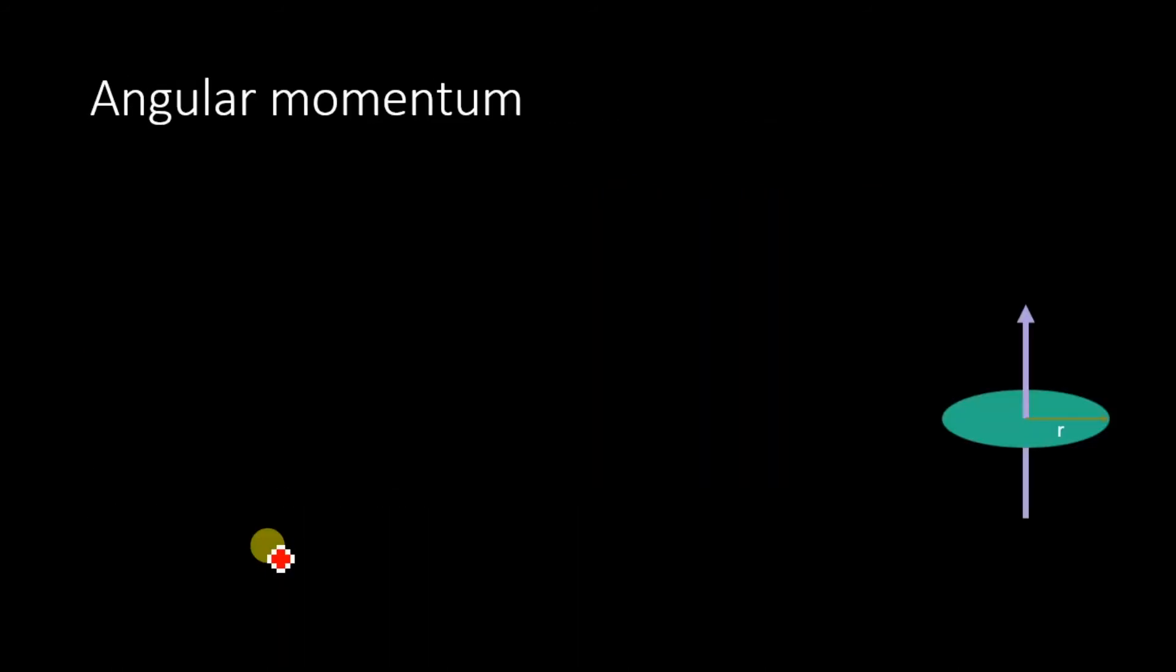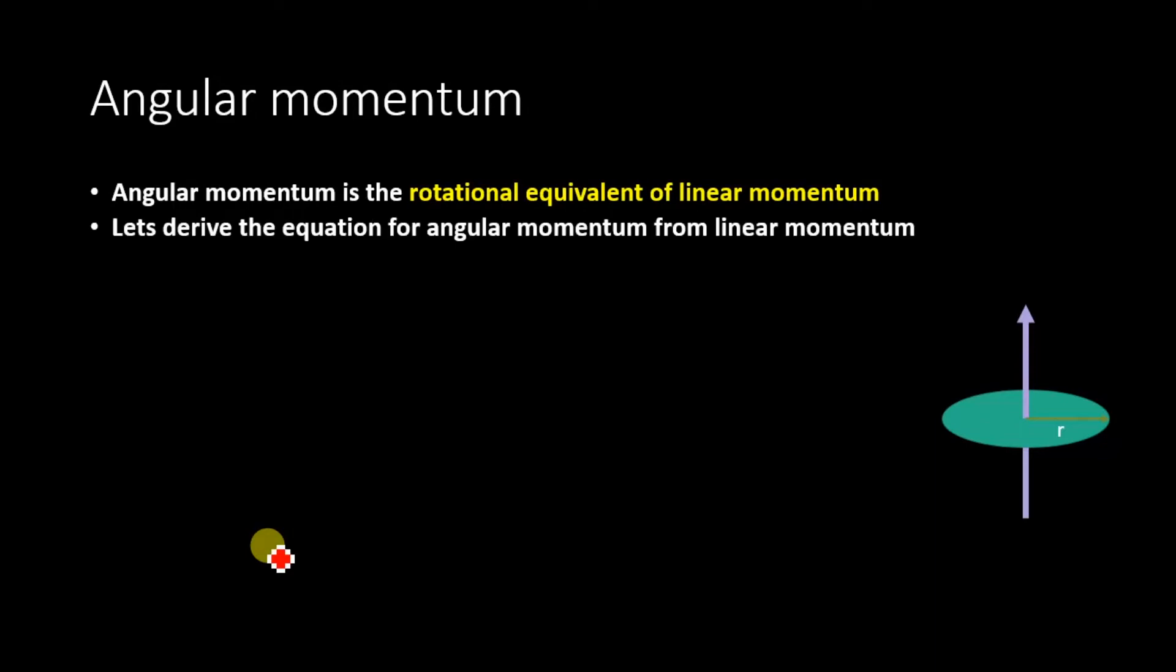Now what is angular momentum? Angular momentum is the rotational equivalent of linear momentum. Let's derive the equation for angular momentum from the linear momentum.